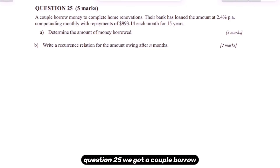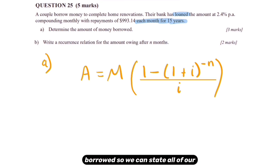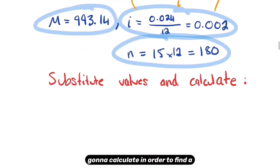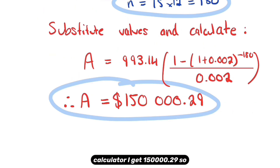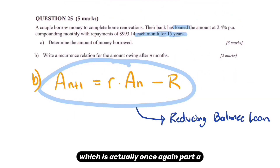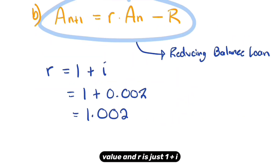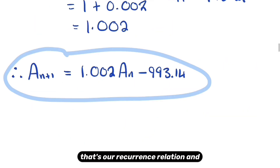For question 25, a couple borrows money to complete home renovations. Their bank has loaned it for 15 years — that tells me it's long term, so I'll use the annuity formula to find the amount borrowed. State all variables from the question, plug them into the formula, and calculate A. The result is $150,000.29. For part B — which is unrelated to part A — we just need to write a recurrence relation. R equals one plus I, and the repayment amount is $993.14, giving us our recurrence relation.